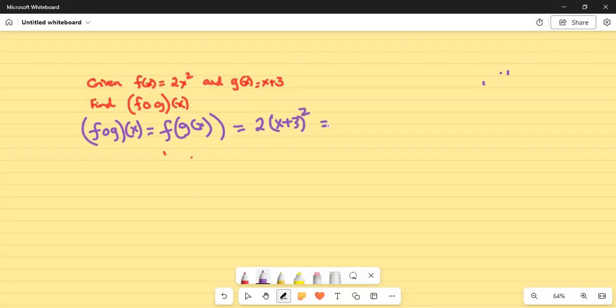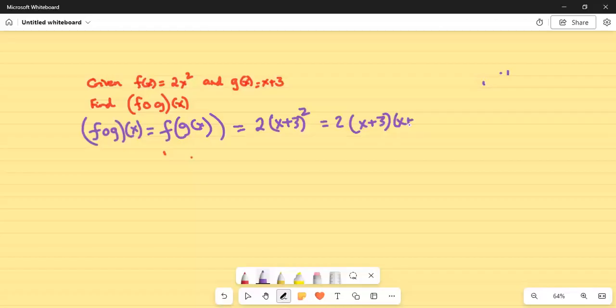Okay, and that is equal to 2(x + 3)(x + 3). So I'll FOIL it, keeping the 2 outside. Now, please don't leave right away. Please watch this video until the end. This is not a very long video. I'll give you an important tip at the end.